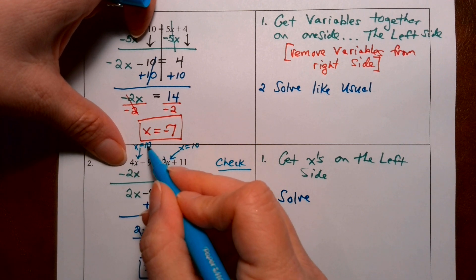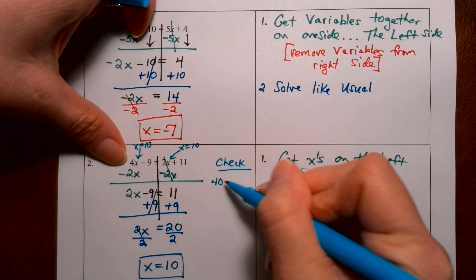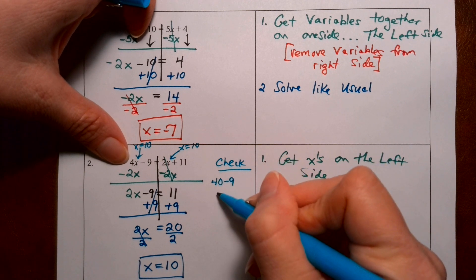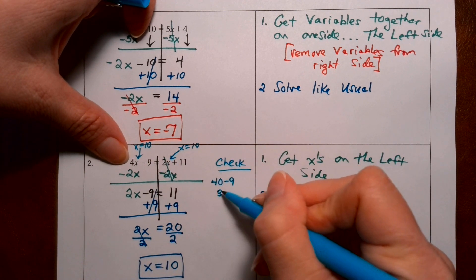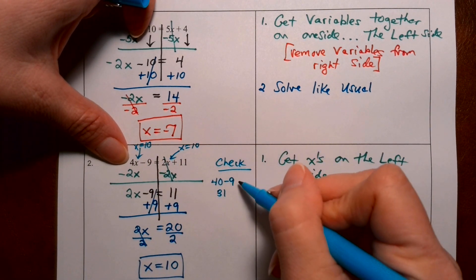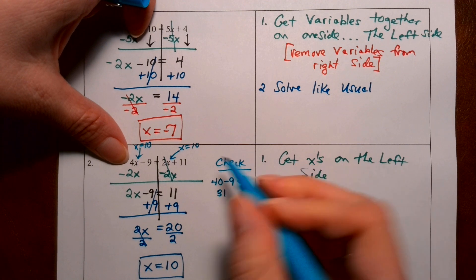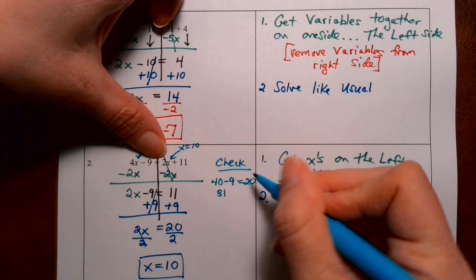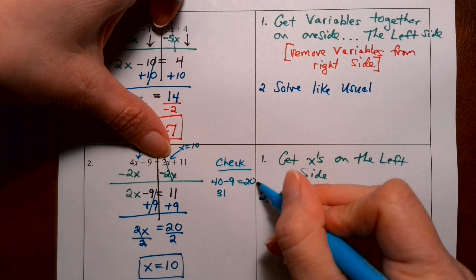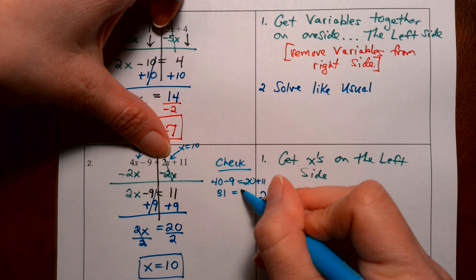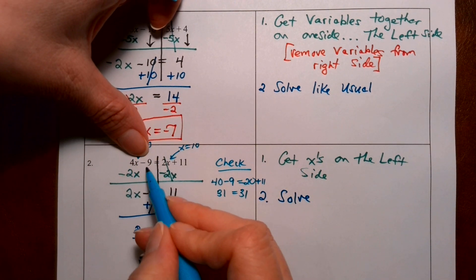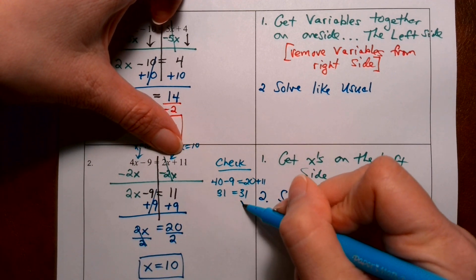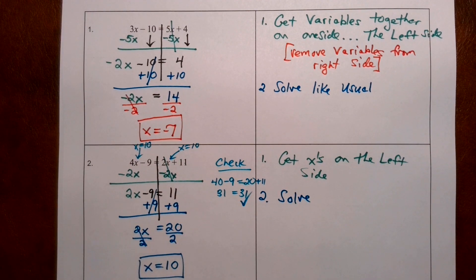4 times 10 is 40. 40 minus 9 — that's going to make the left side equal 31. Does that indeed equal the right side? 2 times 10 is 20. 20 plus 11 — yes, that makes 31 on the left equal to 31 on the right. 10 is indeed the correct solution.